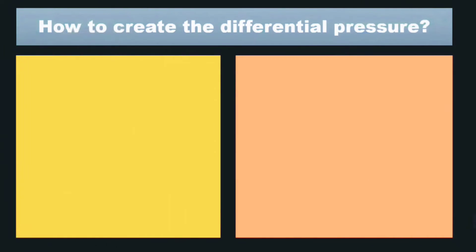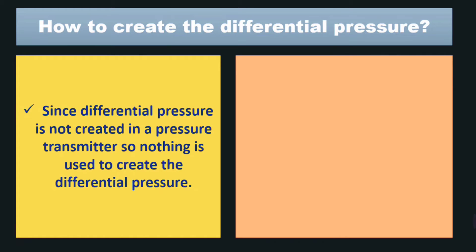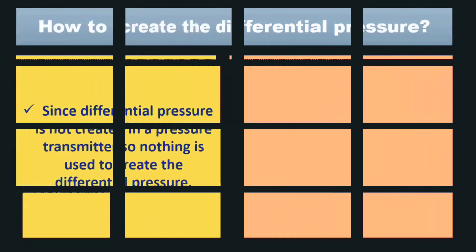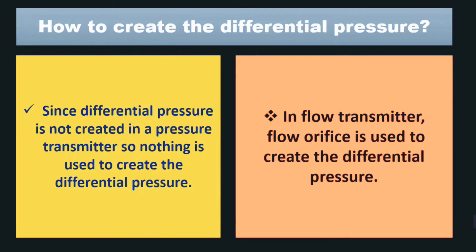The next comparison is how differential pressure is created. Because in a pressure transmitter, differential pressure or DP is not present, no DP is created. Whereas in a flow transmitter, a flow orifice is used to create differential pressure. This question is also asked a lot in interviews: in a flow transmitter, which instrument is used to create differential pressure or DP? You can reply: flow orifice is used to create DP in flow transmitters.